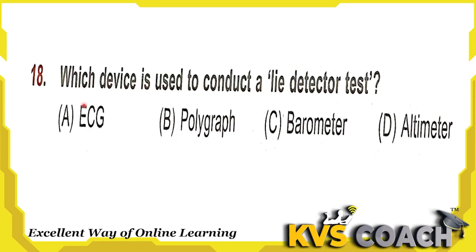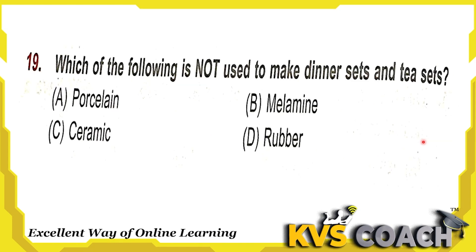Next question: which device is used to conduct a lie detector test? ECG is used to check heartbeat. Polygraph — yes, it is the lie detector test machine. Option C is barometer — used to check air pressure. Option D is altimeter — used to measure distance above sea level. So the right answer is polygraph.